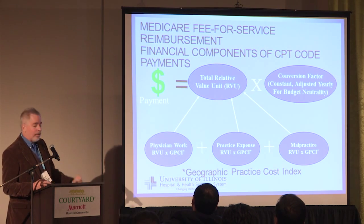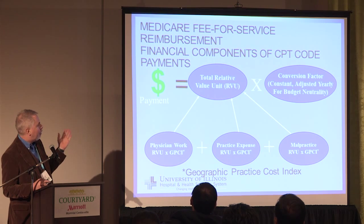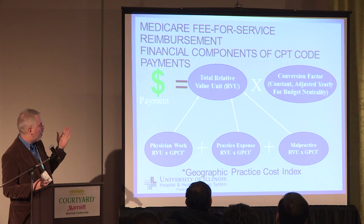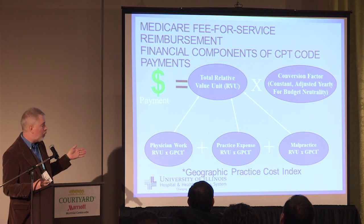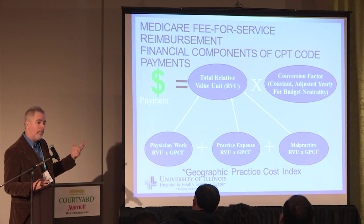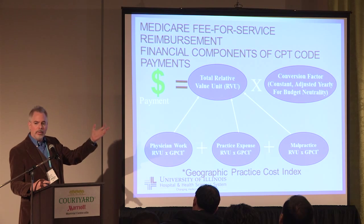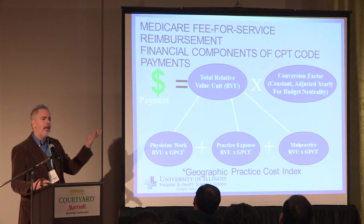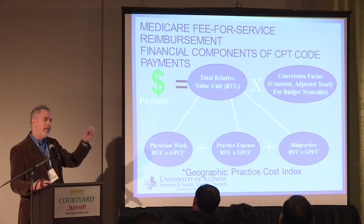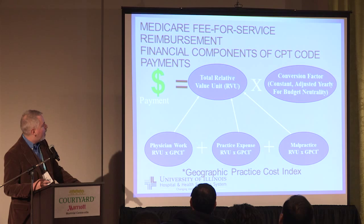You have a dollar value established by what the RVU is, and going into the RVU is the physician work, the practice expense, and the malpractice cost. It's geographically different, so there's a multiplier. Every year, the RVU comes out with some number — it's $35-something dollars — and then you multiply that by the RVU set, and that's what you get. There's also a geographic adjustment and a conversion factor for budget neutrality.